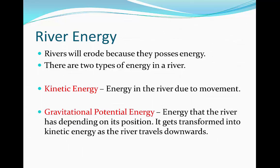The second type is gravitational potential energy, or GPE. This is the energy that a river has depending on its position. If a river is located higher upstream it's going to have more gravitational potential energy, because it has the potential to then move downstream further on. However, if it's located downstream it's going to have less gravitational potential energy, because there's less potential for gravity to push it further downstream.